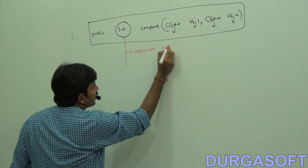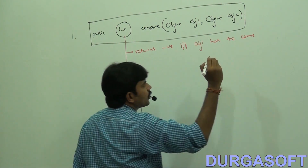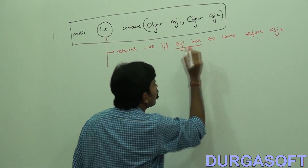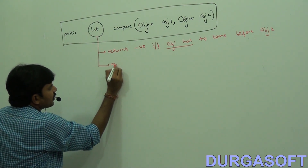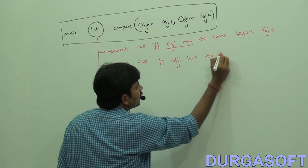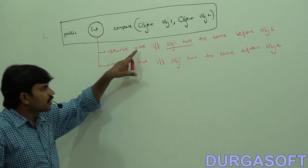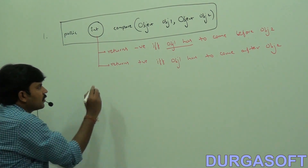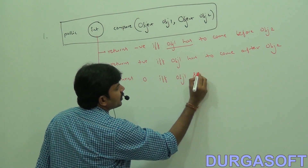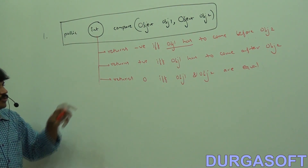The compare method returns negative if and only if obj1 has to come before obj2. It returns positive if and only if obj1 has to come after obj2. Negative means before, positive means after. It returns 0 if and only if obj1 and obj2 are equal.